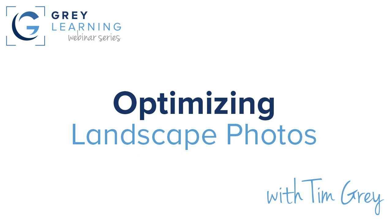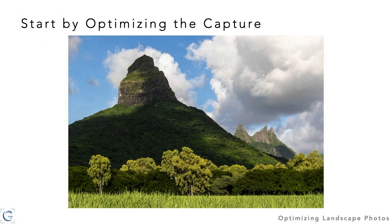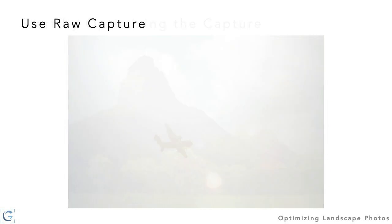Without further ado, let's talk about landscape photos. When we say optimizing, we'll certainly address the process after capture, but it's very important to start by optimizing the original capture. For a landscape photo, that means using raw capture. Quality, detail, and texture are of utmost importance in landscape photography, so raw capture becomes all the more critical.